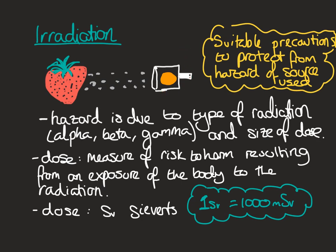When irradiating something — for example, irradiating strawberries — we always need to make sure that suitable precautions are being taken to protect from the hazard of the source used. Here we've got it in a little case. If anyone was working here, depending on the source, they might be behind a lead screen if it was gamma, for example. Really importantly, after this strawberry has been irradiated, it is not radioactive. We eat the strawberry — it's super tasty, and it's all fine.